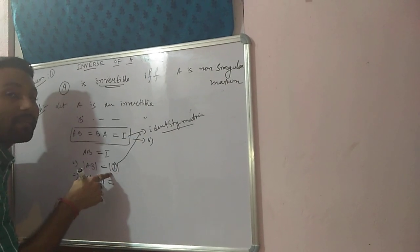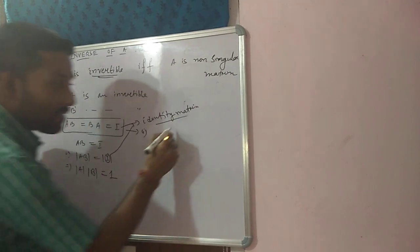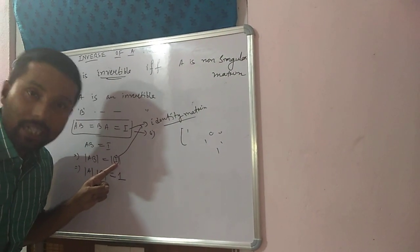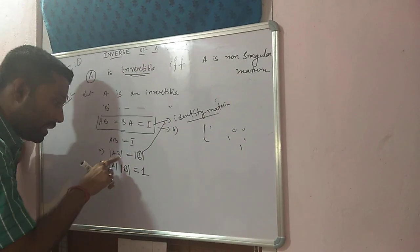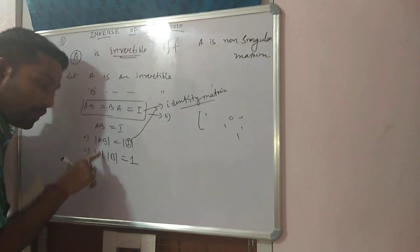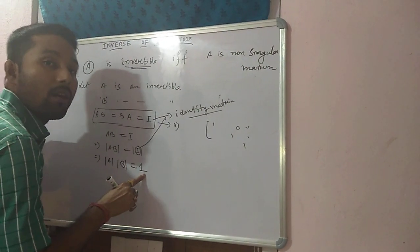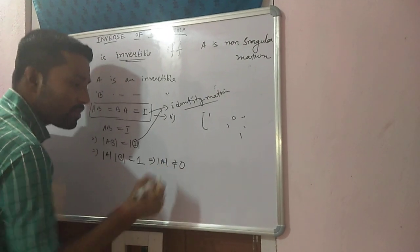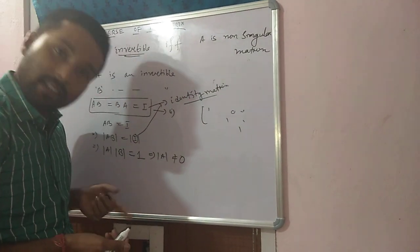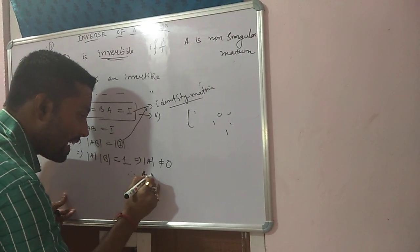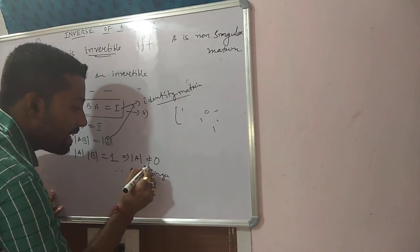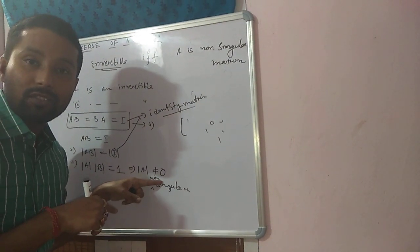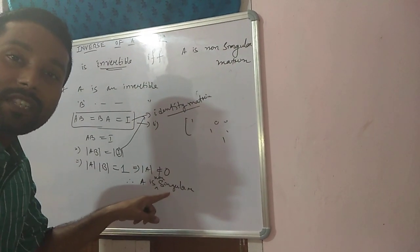Determinant of I is always equal to 1 — identity matrix ka diagonal elements 1 hota hai aur non-diagonal elements 0 hota hai, isliye determinant of I is always 1. So determinant of A into determinant of B equals 1. From here we can say that determinant of A cannot be equal to 0, because the right-hand side is 1. So determinant of A is not equal to 0, which means A is non-singular. So A is non-singular — this is the first half of the proof.